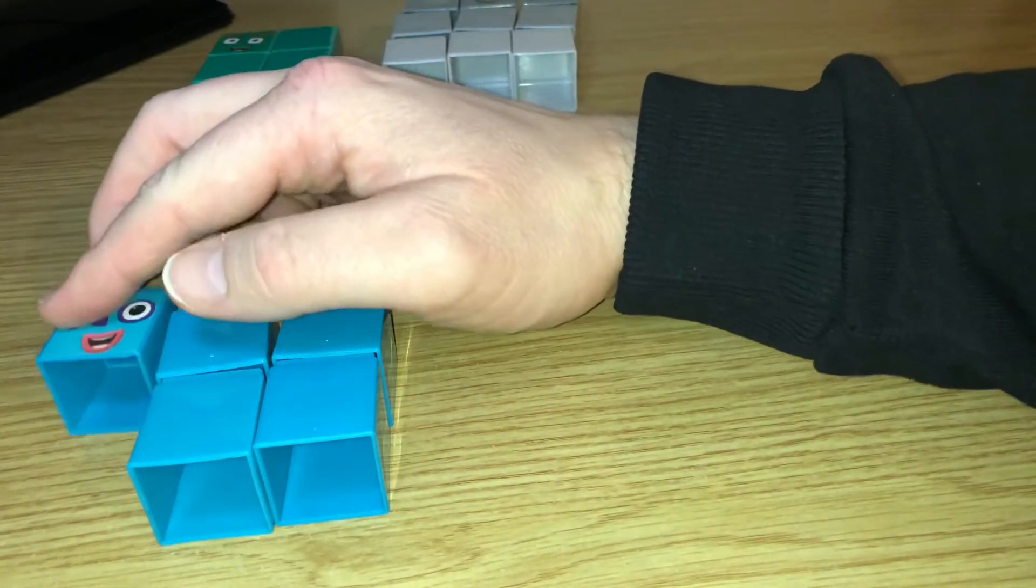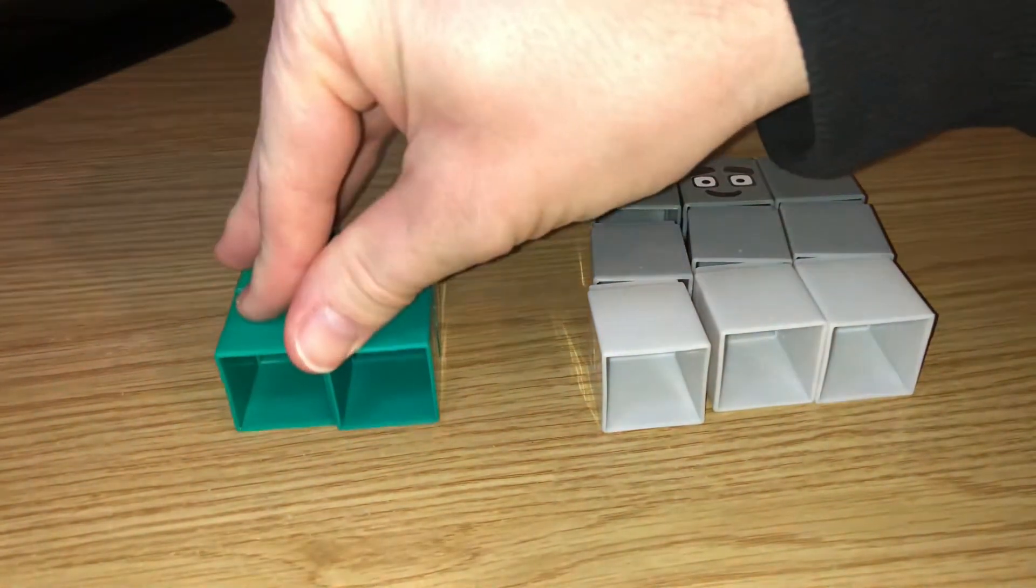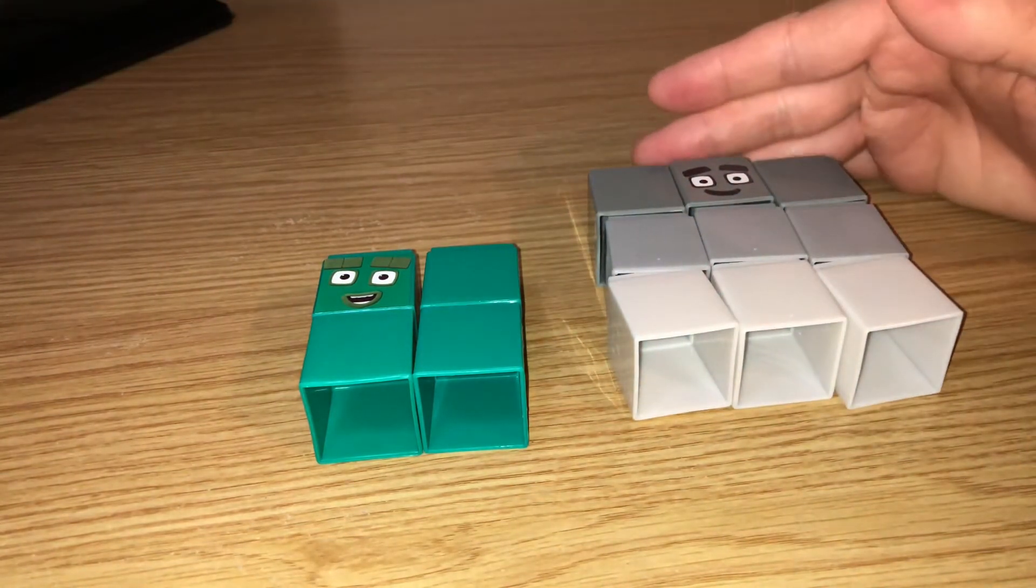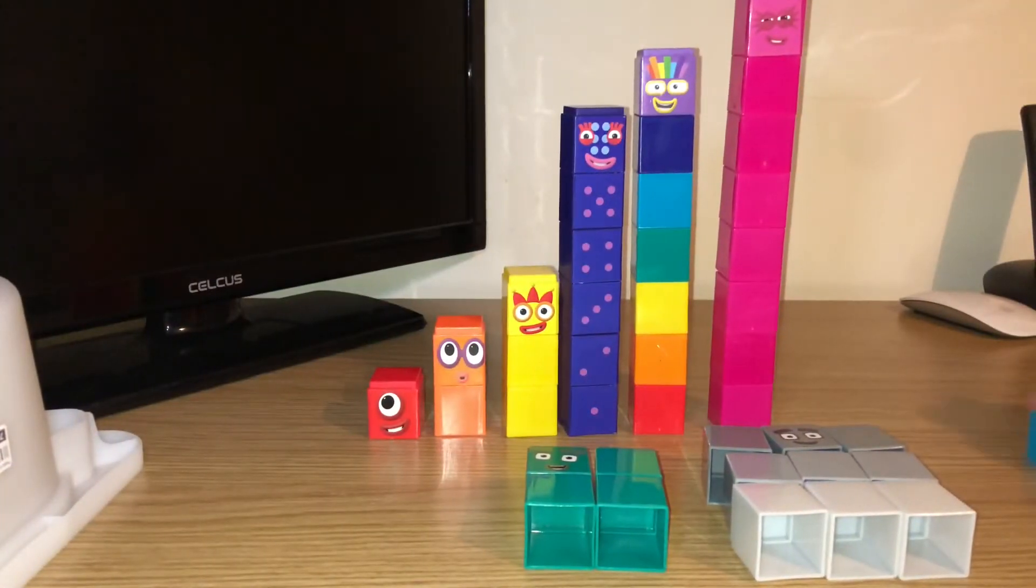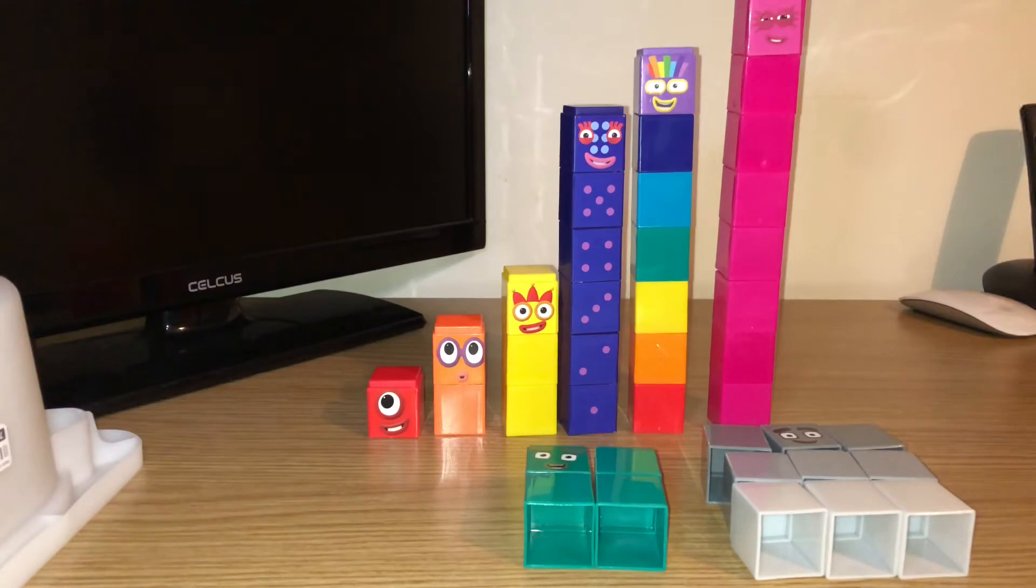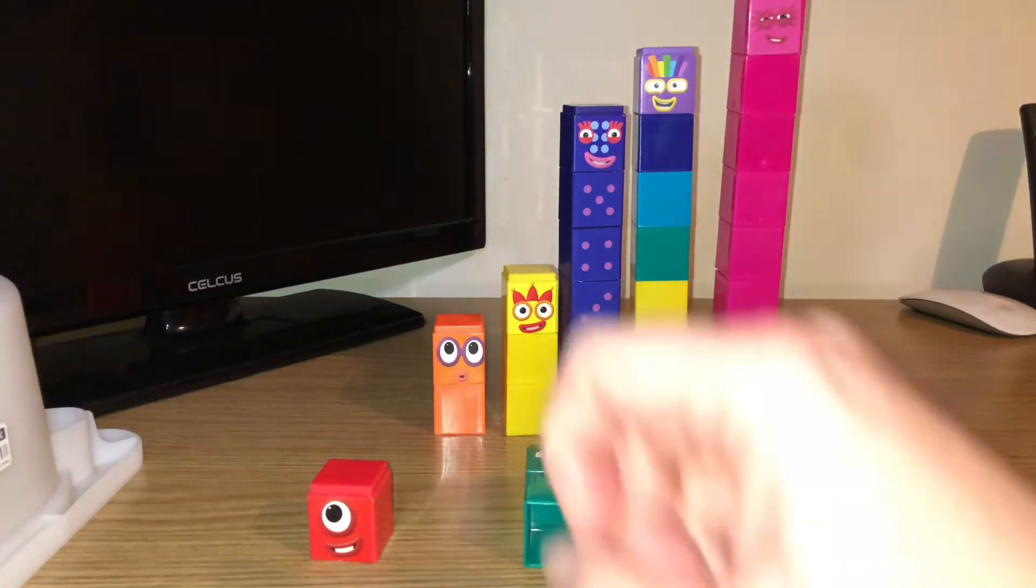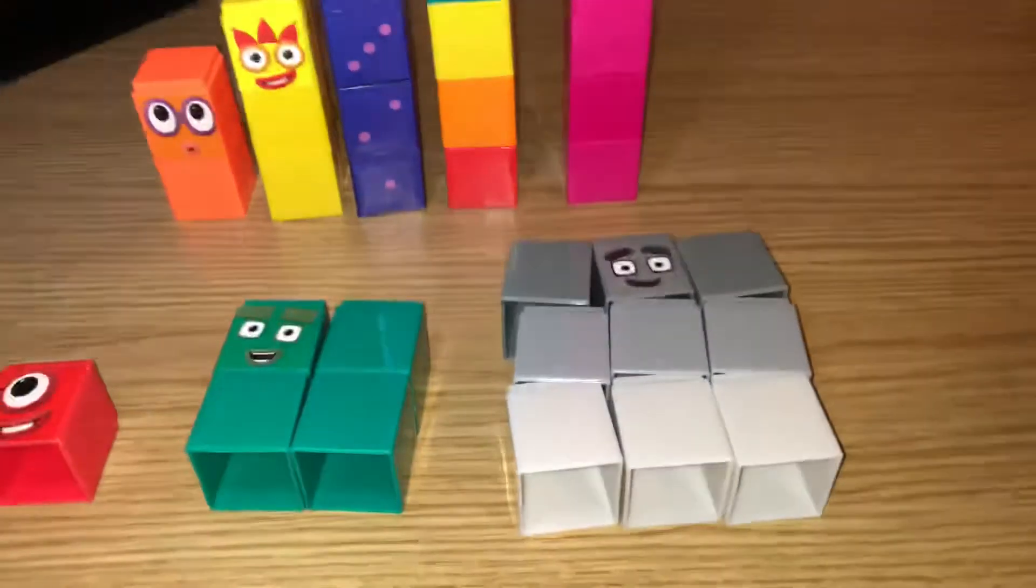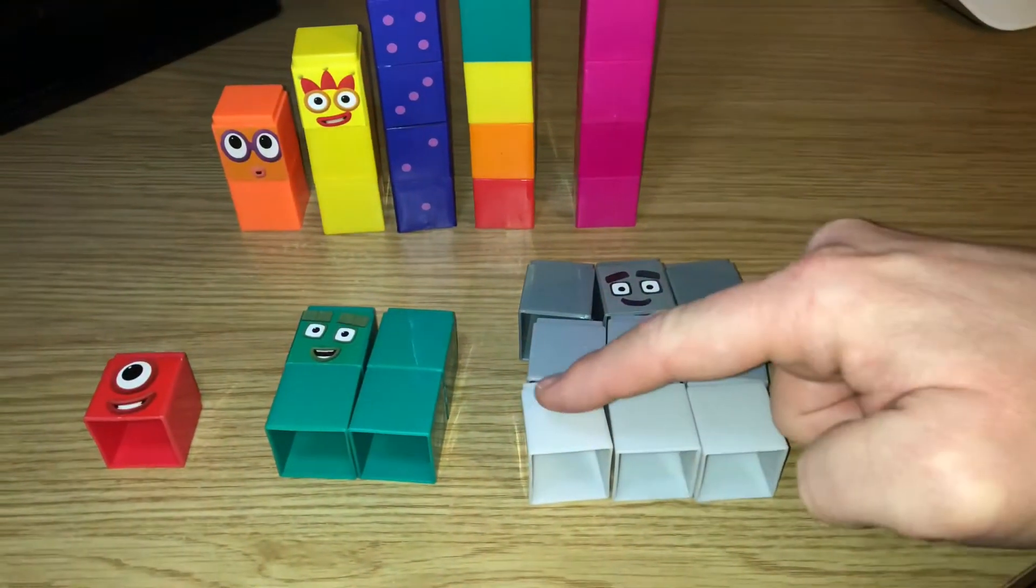Now there is a number block that is smaller than number nine and smaller than number four that actually is already a square. Can you think? Shall I go and get the other number blocks and you have a look and think which one of those is also a square? There they are. I've put number five over here because we know number five isn't a square. Now just look at them. There's one that actually is already a square. It is, look, number one, because he's one block that way and one block that way. So he's actually a square as well. A square one by one, a square two by two, and a square three by three.